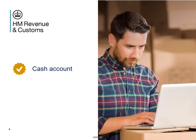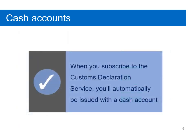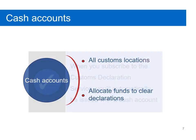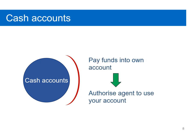Let's start by looking at Cash Accounts. Cash Accounts are replacing the Flexible Accounting System, also commonly referred to as FAS, on the Customs Handling of Import and Export Freight, also known as CHIEF. When you subscribe to the Customs Declaration Service, you'll automatically be issued with a Cash Account. This account can be used at all Customs locations to allocate funds to clear declarations in chronological order. Additionally, you can also pay funds into your own Cash Account, as well as authorise your agent to use the account on your behalf using a standing authority.